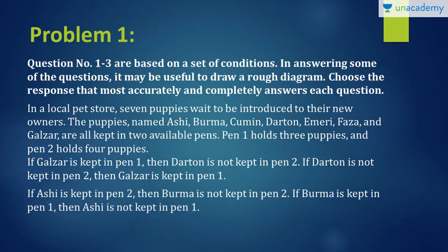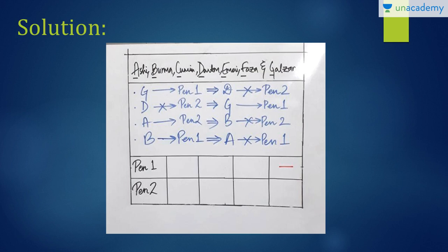So let us see what's the first clue. If Galzar is kept in pen 1, then Dartan is not kept in pen 2. If Dartan is not kept in pen 2, then Galzar is kept in pen 1. Okay, so I've denoted it here. If Galzar is in pen 1, Dartan can't be in pen 2 which means Dartan has to be in pen 1 as well. Next, if Dartan is not in pen 2, then Galzar should be in pen 1. Okay, which again means if Dartan is not in pen 2 means Dartan is in pen 1. So if Dartan is in pen 1, Galzar is in pen 1. So from these two clues I get to know that Dartan and Galzar have to be together no matter what.